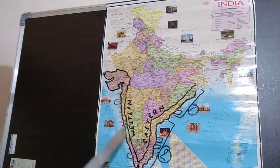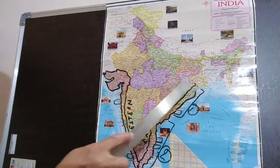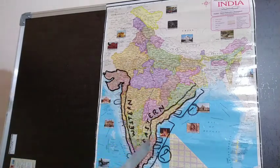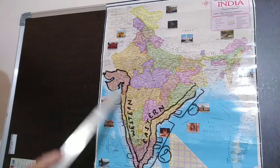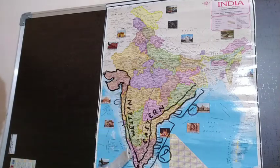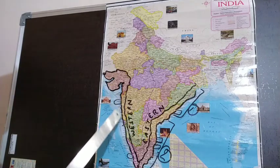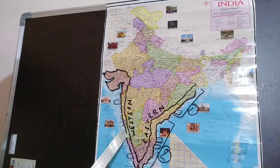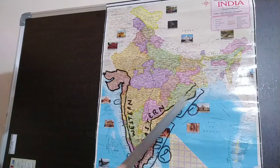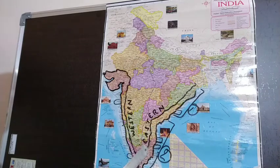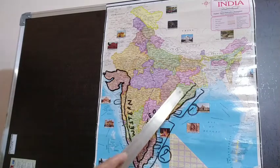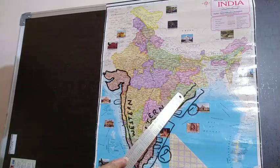To summarize: the western coastal plains are narrow, while the eastern coastal plains are wider. The western coastal plains cover the states of Gujarat, Maharashtra, Karnataka, and Kerala. The eastern coastal plains cover the states of Tamil Nadu, Andhra Pradesh, and Odisha.